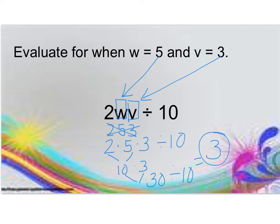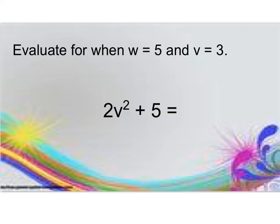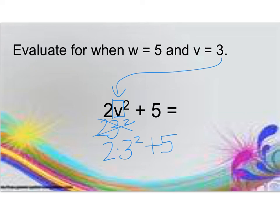You have one more to try. This one's tricky because there's an exponent involved. Pause me and come back when you're ready to check. The directions say v is 3. Don't make the mistake of saying this is 23 squared. It's 2 groups of 3 squared, or 2 times 3 squared. Following order of operations, 3 squared is 9. 2 times 9 is 18. 18 plus 5 is 23.